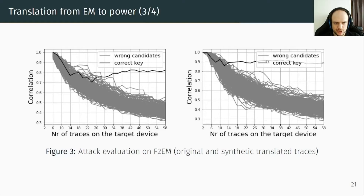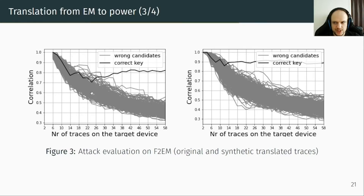This graph shows the attack evaluation on F2 EM with CPA. On the left is the CPA performance on original traces; on the right, on translated traces. The x-axis is the number of traces, the y-axis is the correlation. Gray represents wrong key candidates; black represents the correct key. On the original dataset, CPA found the correct key with 30 traces. On the synthetic translated traces, CPA found the correct key with only 15 traces — the performance is improved with trace translation.